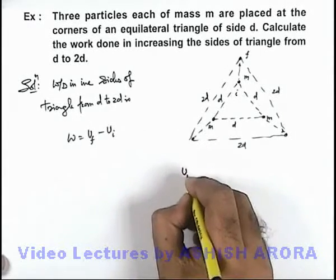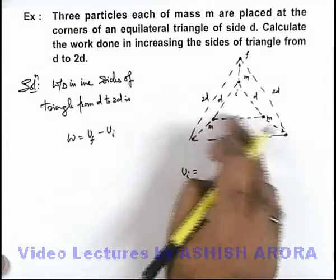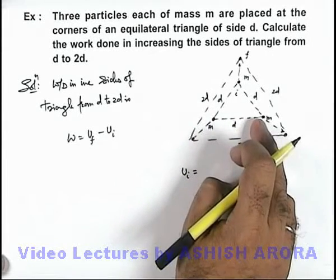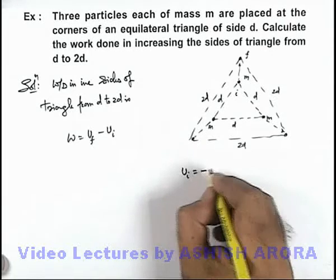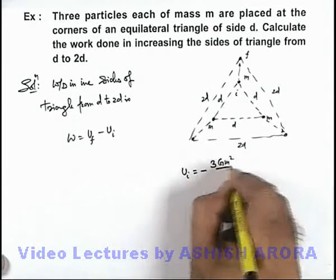And here initial energy can be given as 3 particles are located each at a separation d, then energy can be directly written as minus 3Gm² by d.